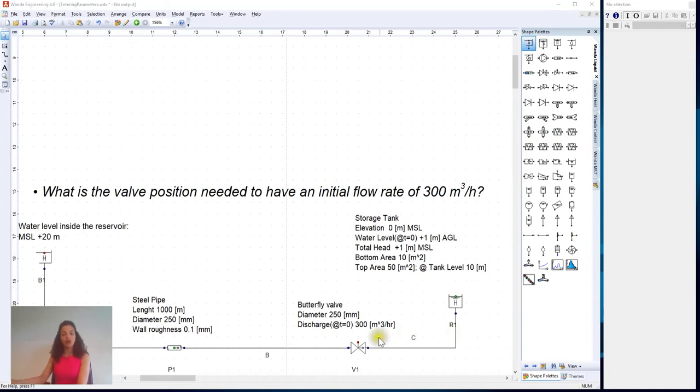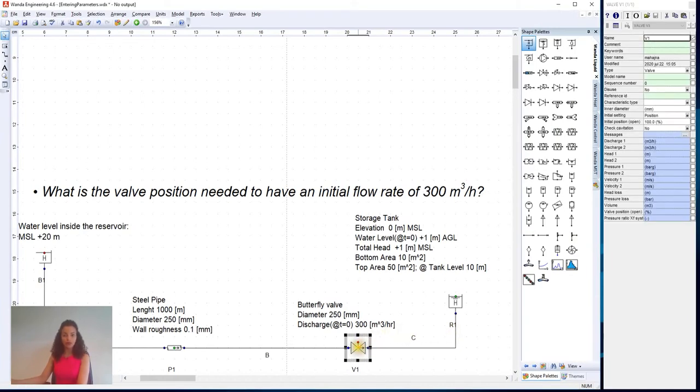I do so by selecting the valve in the model, and in the property window we need to choose a characteristic type by pressing on the small arrow on the right. We see that we have different options.